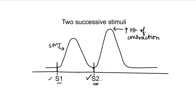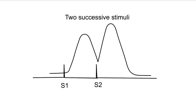Now suppose we give the second stimulus a bit more early, while the muscle is still relaxing. Then the muscle was relaxing, but because of the second stimulus another nerve action potential has been generated, which goes to the muscle causing a muscle action potential, which ultimately causes muscle contraction. So the muscle was relaxing but is not able to relax fully — there is a start of new contraction with more height. The second stimulus here falls in the relaxation phase.